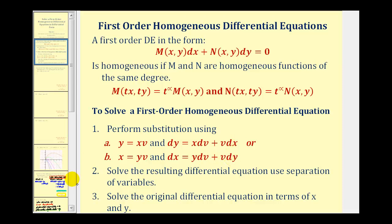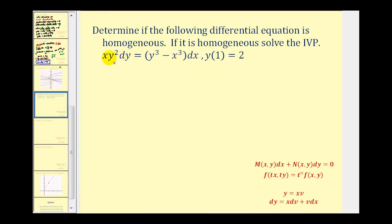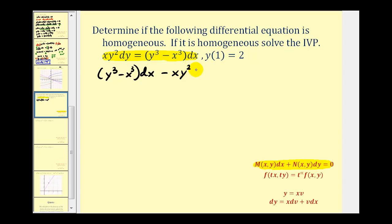Let's take a look at our example. The first step is to put the given differential equation in standard form. So let's subtract XY squared DY on both sides, giving us the quantity Y cubed minus X cubed DX minus XY squared DY equals zero. Notice we have an initial condition, so after finding the general solution we can find the particular solution given that Y(1) equals two.